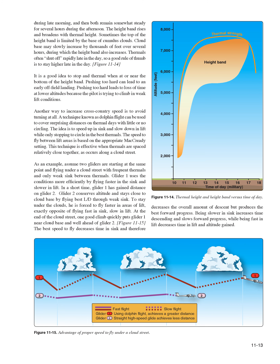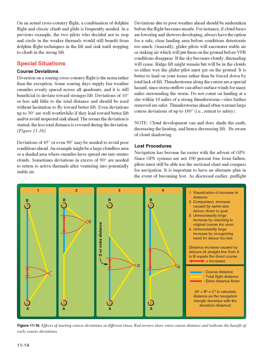As an example, two gliders flying under a cloud street with frequent thermals: Glider 1 uses conditions more efficiently by flying faster in sink and slower in lift, quickly gaining distance on Glider 2. Glider 2 conserves altitude by flying best L/D through weak sink, but is then forced to fly faster in areas of lift—exactly opposite of the optimal technique. At the end of the cloud street, one good climb quickly puts Glider 1 near cloud base and well ahead. On an actual cross-country flight, a combination of dolphin flight and classic climb-and-glide is frequently needed.